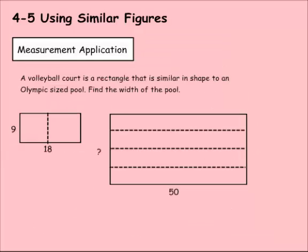Let's do a measurement application. Same idea. A volleyball court is a rectangle that is similar in shape to an Olympic-sized pool. So find the width of the pool. I can create a proportion problem and solve it the same way as I did with that triangle.